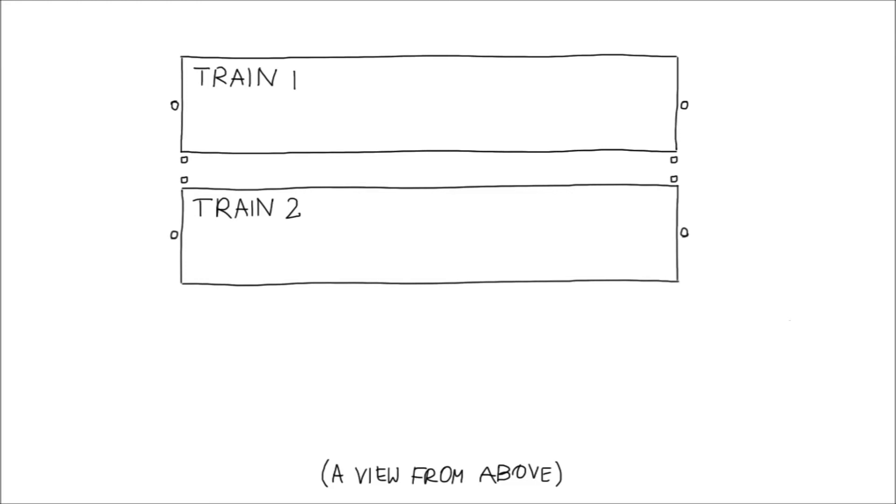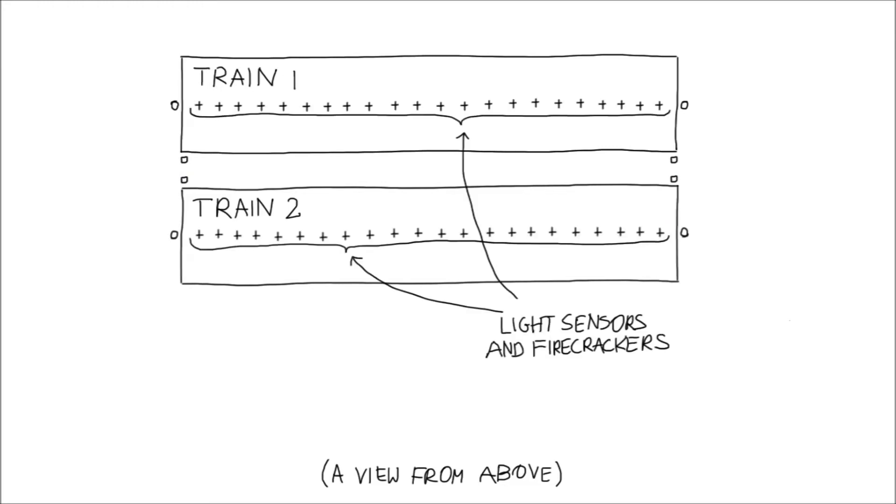When the corresponding sensors are close to each other, the adjacent lamps make a quick flash of light. Moreover, along each train there are light sensors connected to firecrackers. If light from the lamps comes to a sensor from both sides simultaneously, the nearby firecracker goes off.